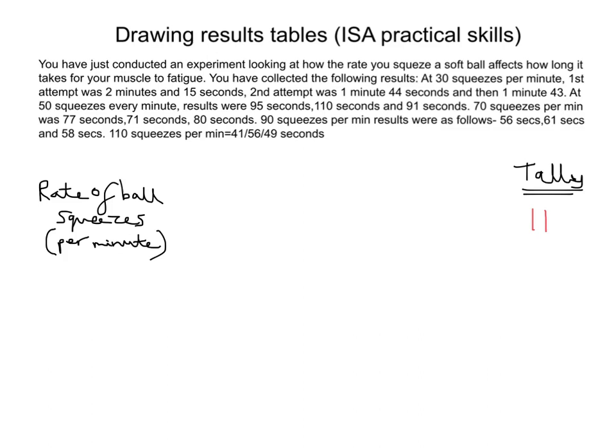Next we would have our dependent variable — the thing that we've been actually measuring in the investigation — and again it has to be fully described. So this would be your third mark. You've had one for the independent variable, one for the unit, and one now for the dependent variable. In this practical, if you read the information at the top, it would be the time taken for the arm muscle to fatigue. Now I've seen students in the past just put 'time to fatigue', 'time to stop', or just 'time' on its own — none of those would get the mark. It has to be as specific as you can make it. The more specific you can make it, the less chance an examiner has of marking you down. Usually it should be the very thing that you would plot on a graph — what should be your x-axis and y-axis label should be your independent and dependent column.